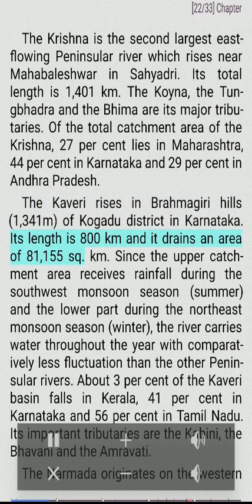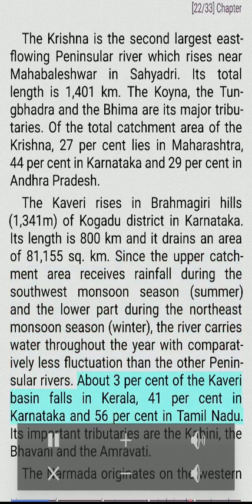The Kaveri rises in Brahmagiri hills (1,341 meters) of Kodagu district in Karnataka. Its length is 800 km and it drains an area of 81,155 sq km. Since the upper catchment area receives rainfall during the southwest monsoon (summer) and the lower part during the northeast monsoon (winter), the river carries water throughout the year with comparatively less fluctuation than other peninsular rivers. About 3% of the Kaveri basin falls in Kerala, 41% in Karnataka, and 56% in Tamil Nadu. Its important tributaries are the Kabini, the Bhavani, and the Amravati.